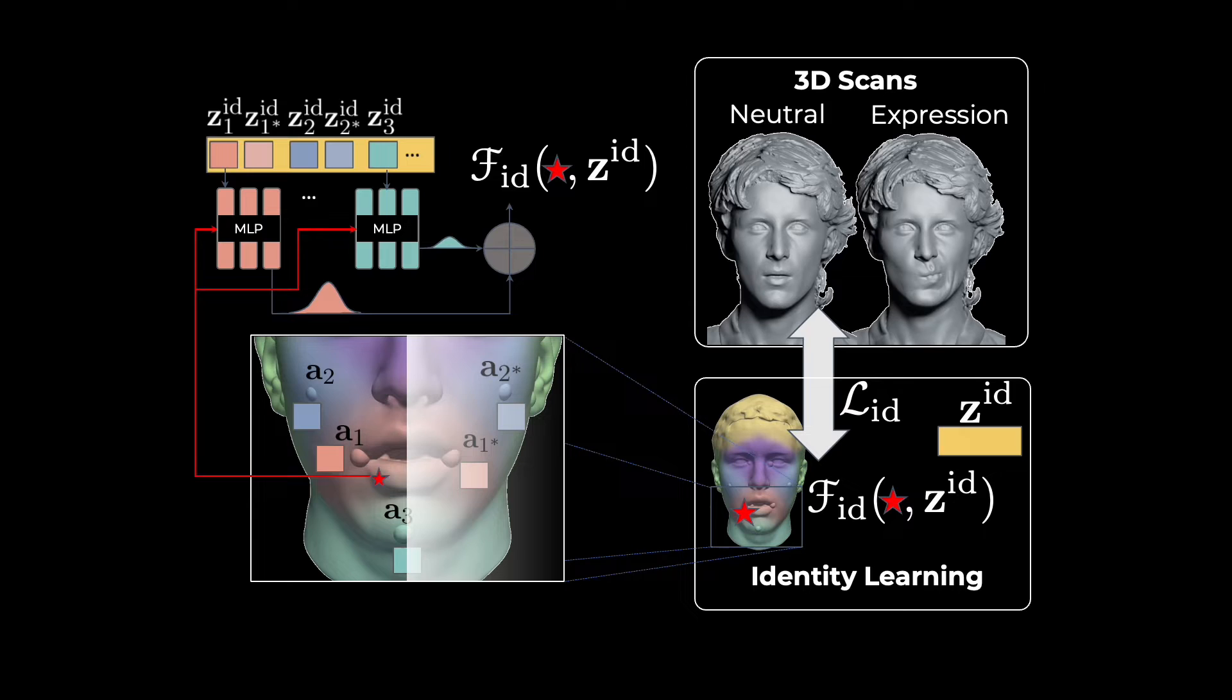Furthermore, we incorporate face symmetry into our representation. To achieve this, we share network parameters for symmetric anchor points and mirror their respective local coordinate systems.